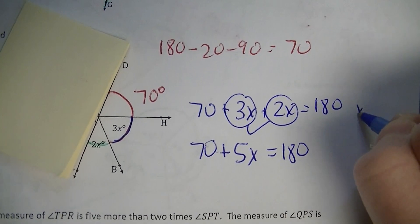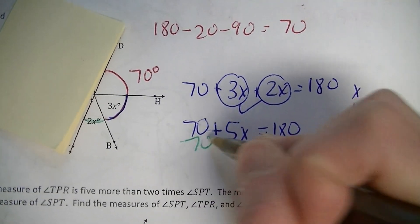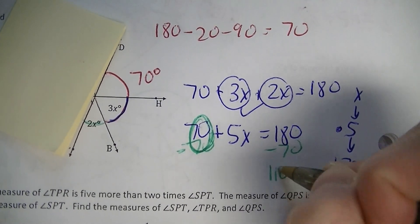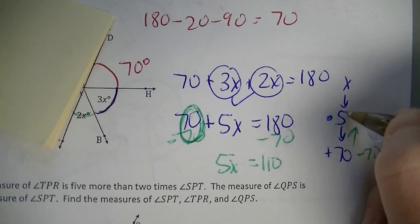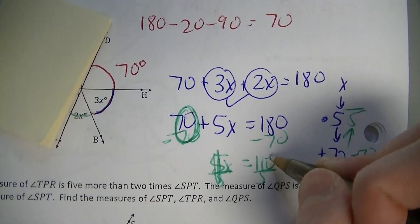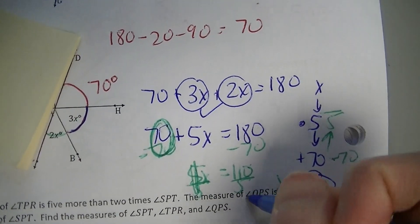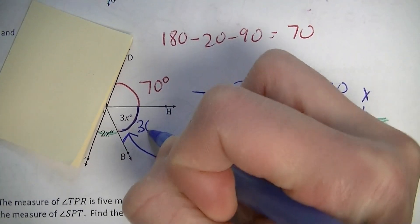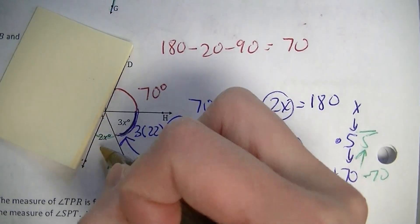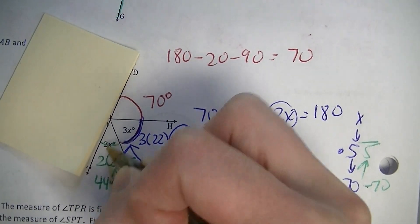Now I can solve it. Start with x, then we multiplied it by 5, then we added 70. The inverse operation of adding 70 is to subtract 70 from both sides. 70 take away 70 is 0, and 180 take away 70 is 110. So 5x equals 110. Divide both sides by 5: x equals 22. Now substitute back in: for the 3x angle, that's 3 times 22 which is 66 degrees. And for the 2x angle, that's 2 times 22 which is 44 degrees.